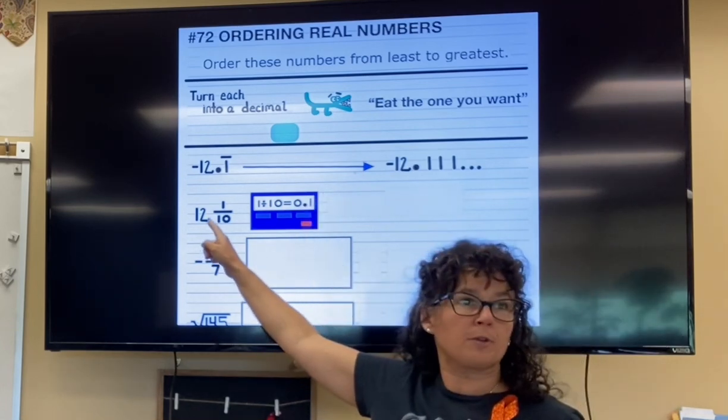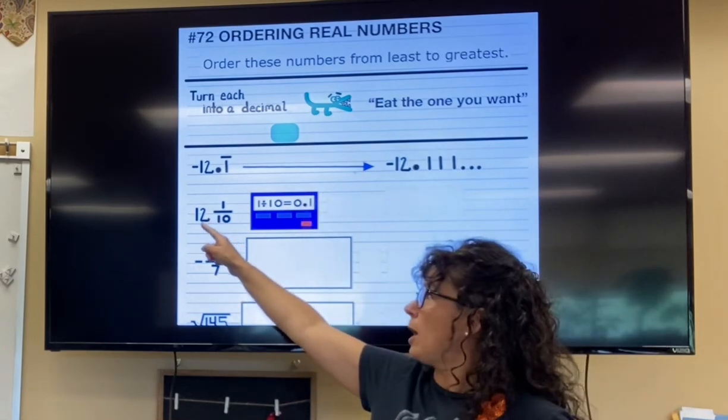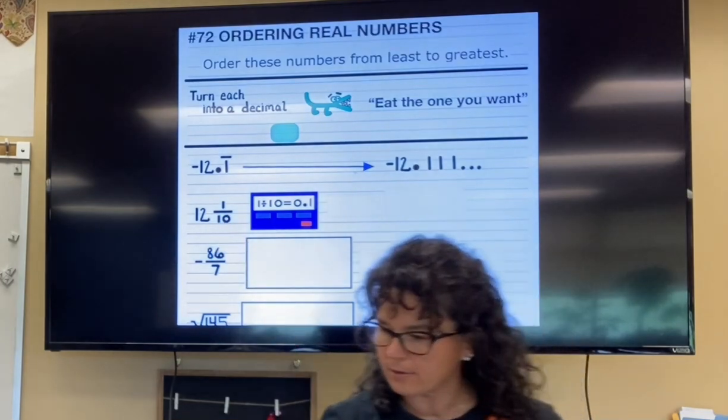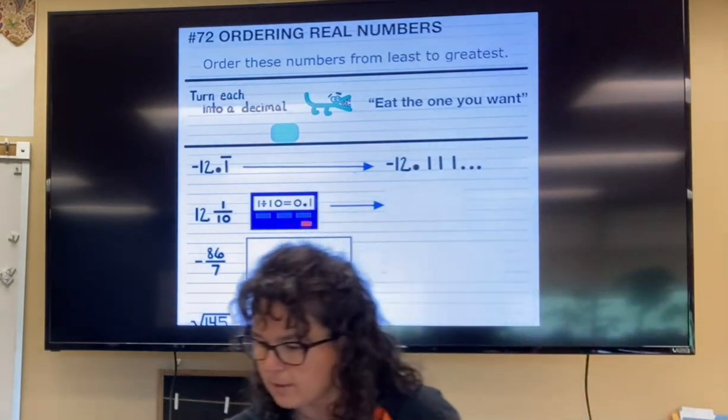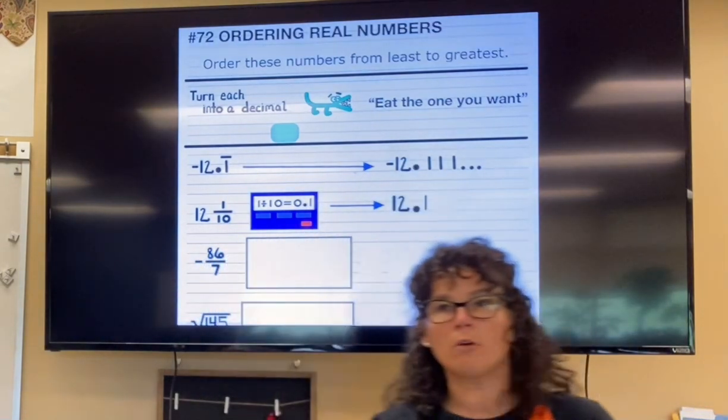Now there's still a 12 in front of this, so if I put the 12 with the 1 tenth, or in other words, the 12 with the 0.1, that's going to give me 12.1.